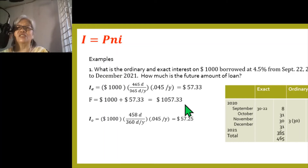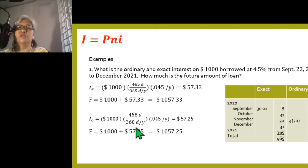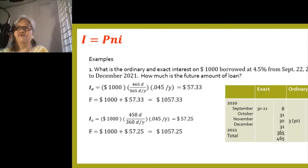For ordinary interest, we use the same formula. We have $1,000 multiplied by 458 days over 360 days per year — because it is ordinary — times 4.5%. That gives us an interest of $57.25. And the future value of the loan is $1,057.25.